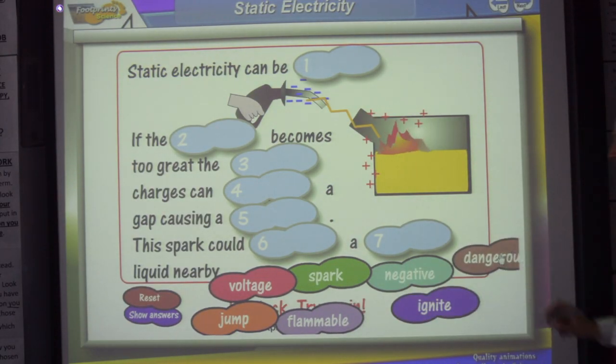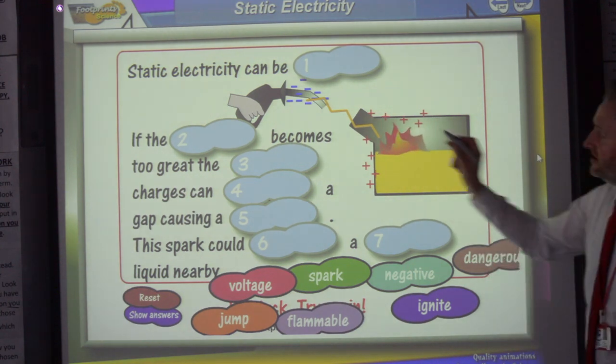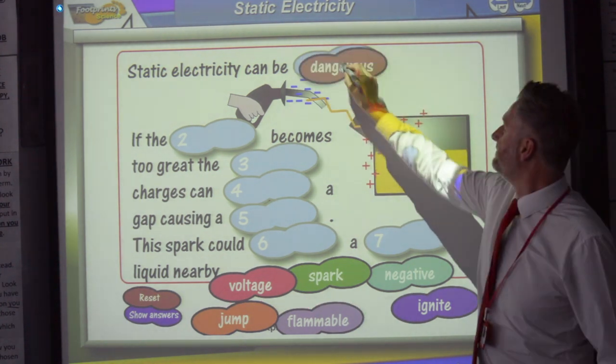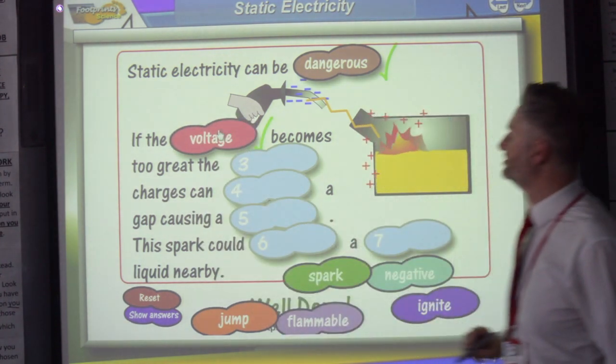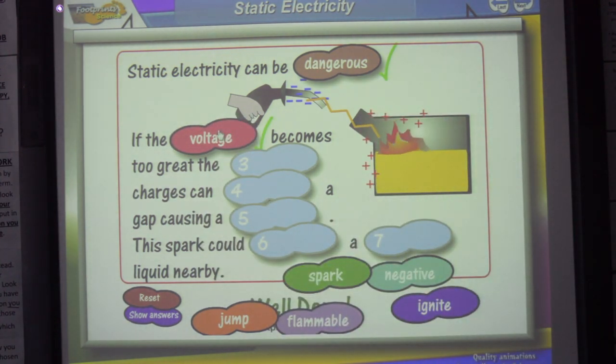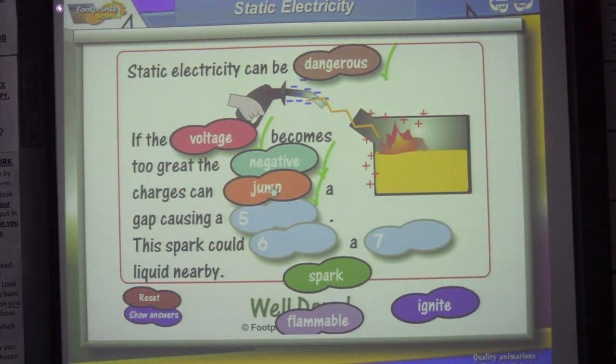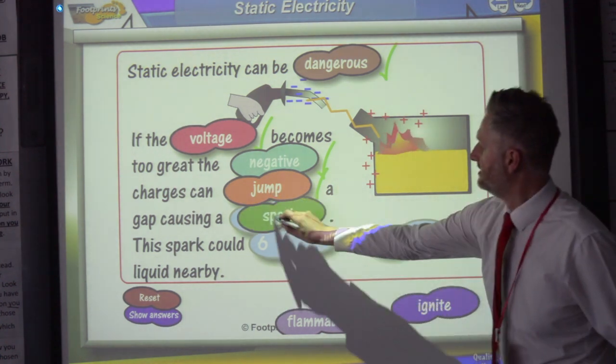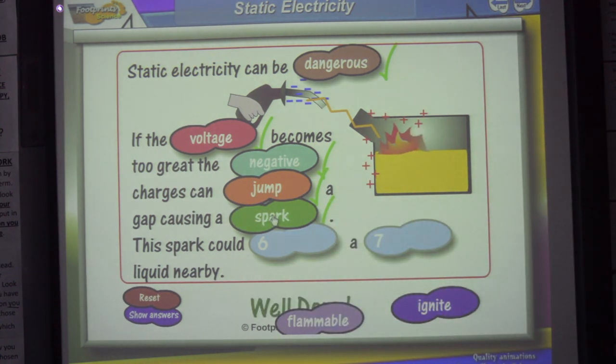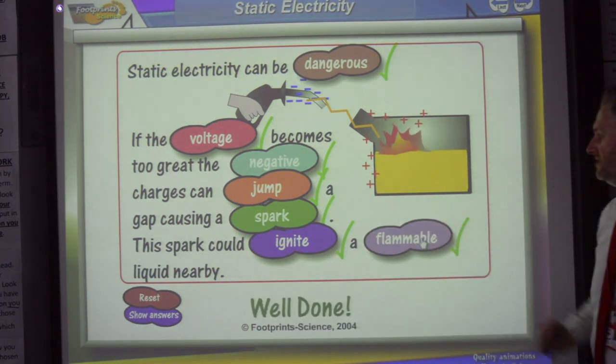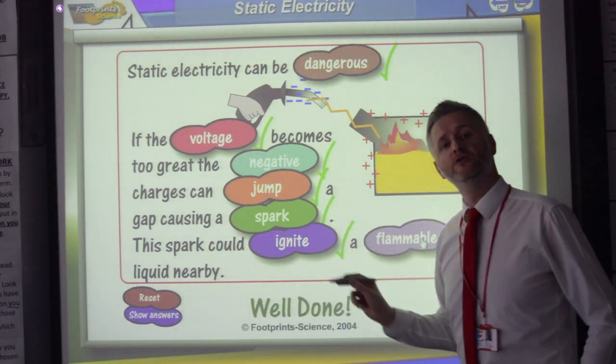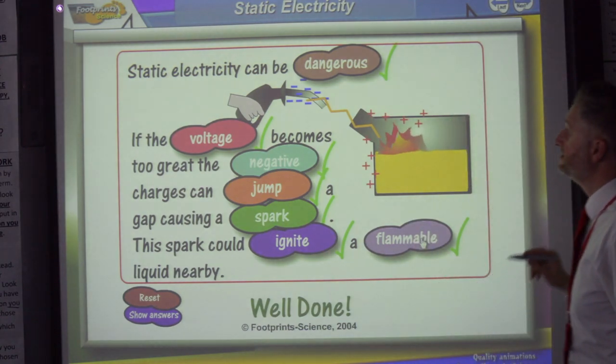So let's have a go at this. Seven missing words. There we go. Pause the video and have a go. Static electricity can be dangerous. If the voltage becomes too great, the negative charges can jump a gap causing a spark. This spark could ignite a flammable liquid nearby. That's a very common question to be asked in your exam.